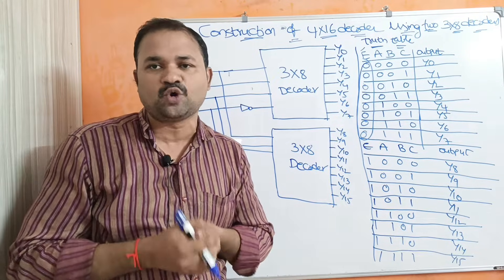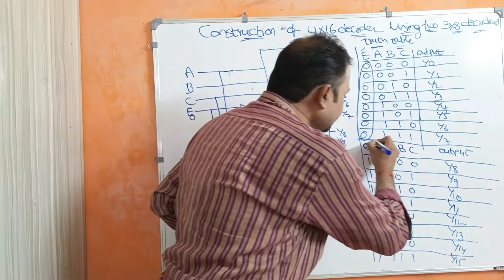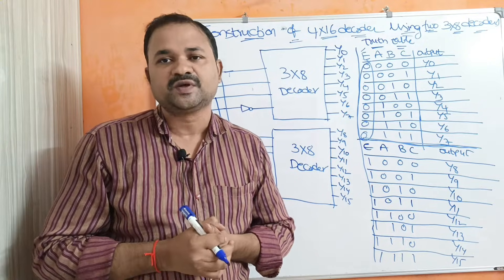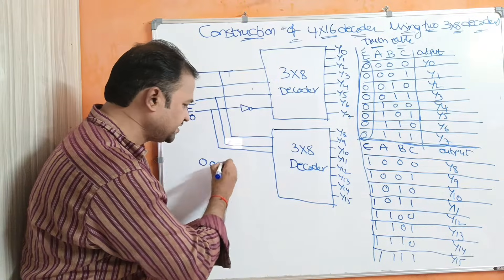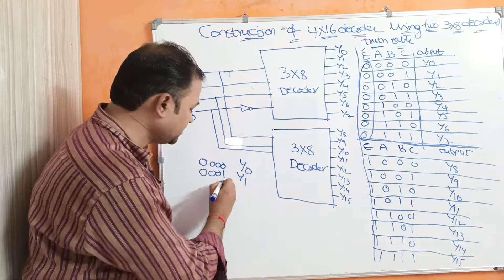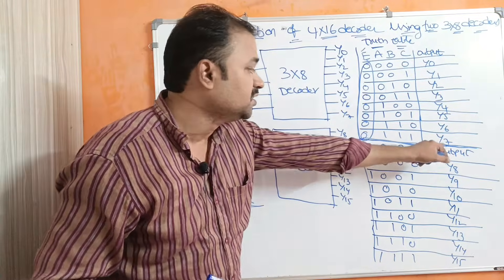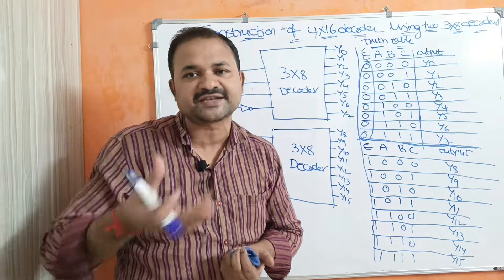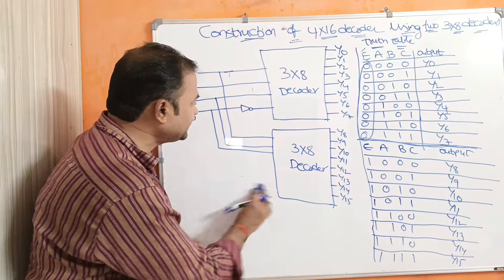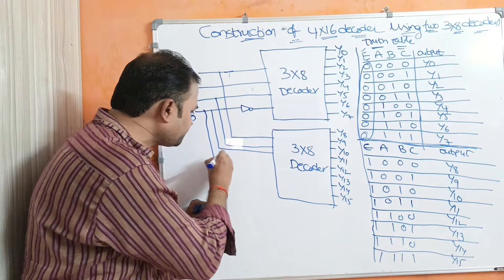We know that a 4 by 16 decoder accepts 4 inputs and produces 16 outputs. The first 8 outputs correspond to the first half of the 4 by 16 decoder truth table. Now we need to construct the remaining half using the second 3 by 8 decoder. The second decoder also accepts inputs A, B, C, and the last input comes from the enable input directly.